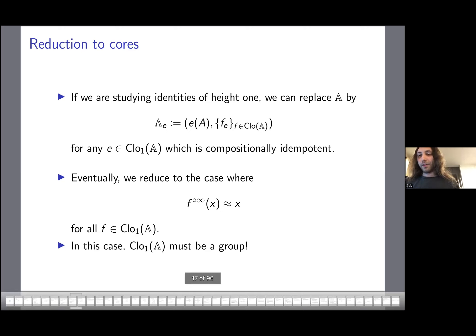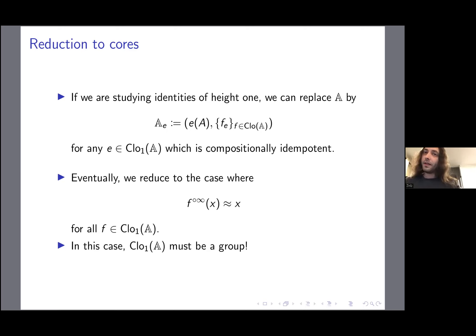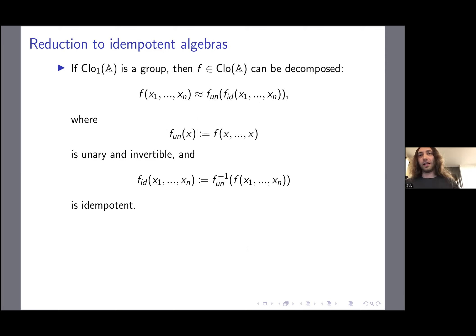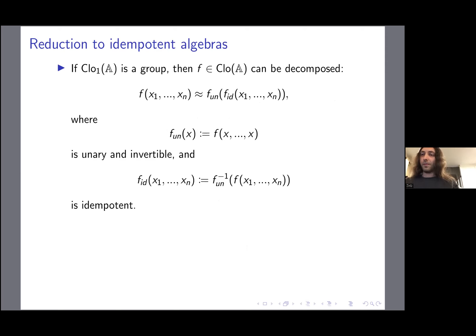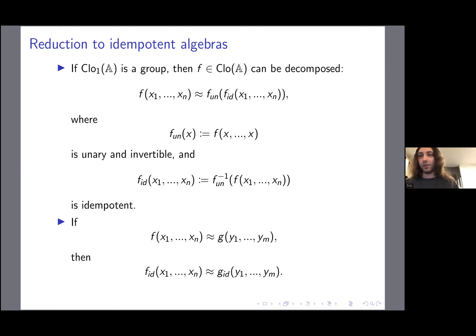When the unary operations of the clone form a group, the associated relational structure studied in the constraint satisfaction problem is called a core. This is how we reduce general CSPs to cores. There is also a corresponding reduction to idempotent algebras: if the unary operations form a group, every function can be decomposed into a unary part and an idempotent part. If you have a height-1 identity in the original clone, then the idempotent parts satisfy the same identity.